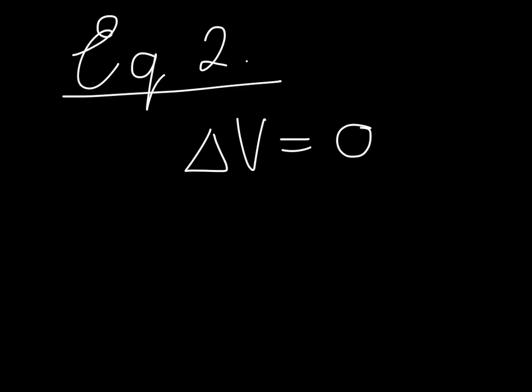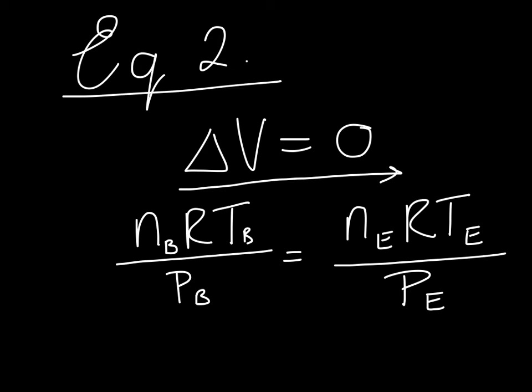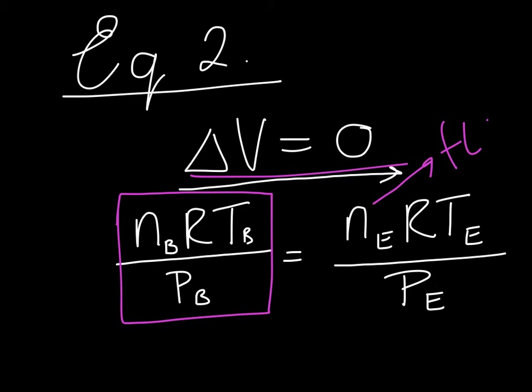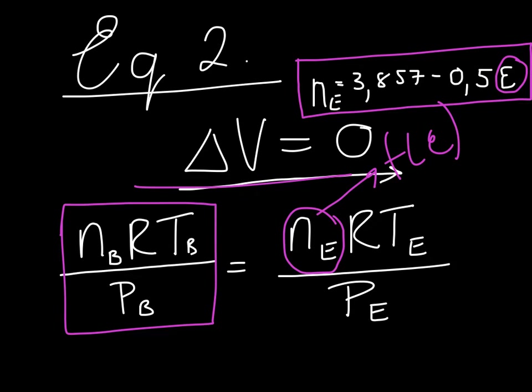Never overlook the obvious when you are setting up your equations. We can calculate the reaction volume at the beginning of the process which must remain constant. The number of moles at the end we can express as a function of epsilon. And we have our second equation containing all three our unknown parameters.